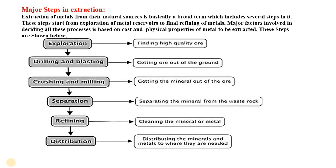The extraction of metals seems simple but comprises many steps. The major steps during extraction of lanthanides are: exploration — finding high-quality ore; drilling and blasting — getting ore out of the ground; crushing and milling — getting the mineral out of the ore; separation of the mineral from waste rock; refining — cleaning the mineral or metal; and finally distribution, where these minerals or metals are needed.